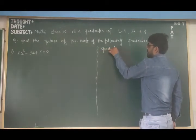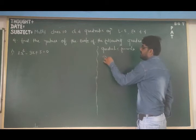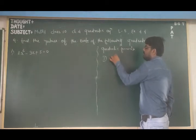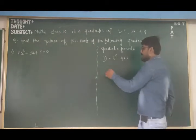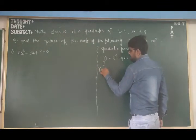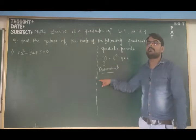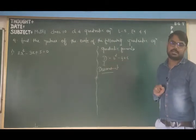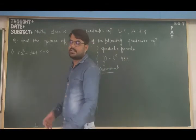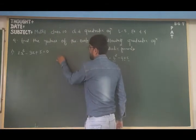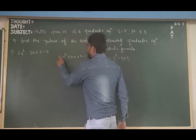What is the quadratic formula? The quadratic formula is always expressed using D, where D equals b squared minus 4ac. D is called the discriminant. Remember: D equals b squared minus 4ac. Now, what are b, a, and c? These come from the standard form of the quadratic equation: ax² + bx + c = 0.